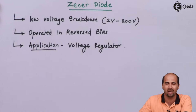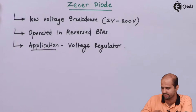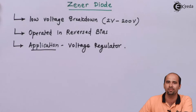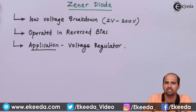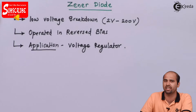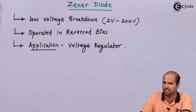The Zener diode is operated in reverse bias mode and is used predominantly as a voltage regulator to keep constant DC voltage at the output even though the input voltage is unregulated — that is, pulsating DC in nature or changing in magnitude. The next question is how the p-n junction diode operates in this way, so we will understand the construction of the Zener diode and then learn its working process.